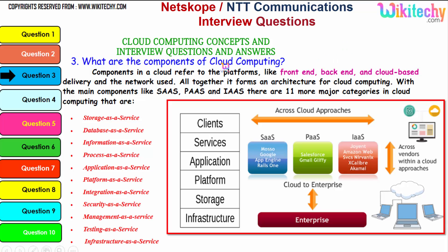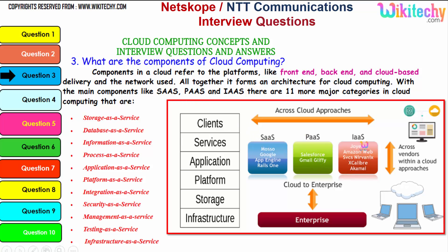Now let's talk about the components of cloud computing. Components in a cloud refer to platforms like a front-end, backend, cloud-based delivery, and the network used. All together they form an architecture for cloud computing, with the main components being Software as a Service, Platform as a Service, and Infrastructure as a Service.